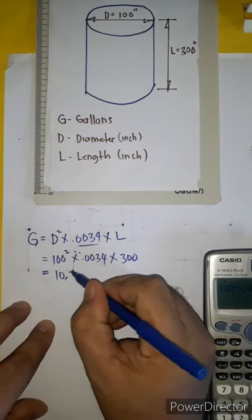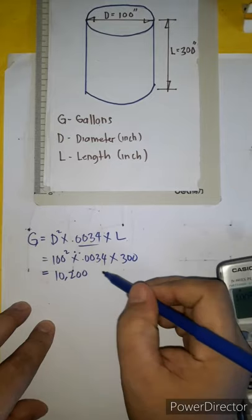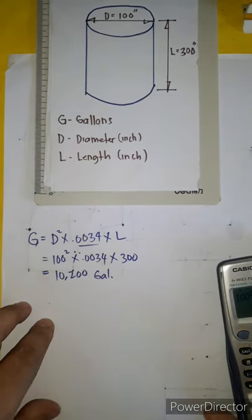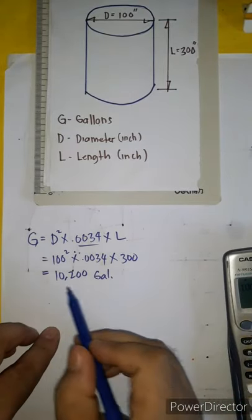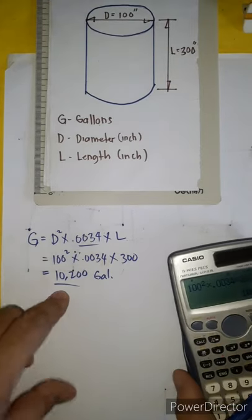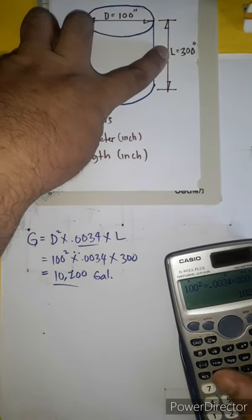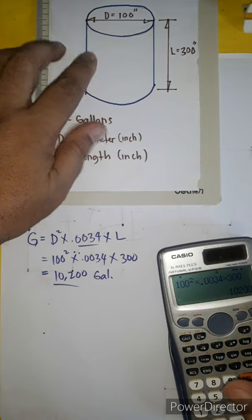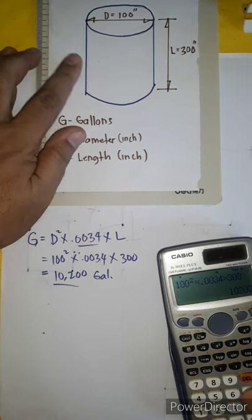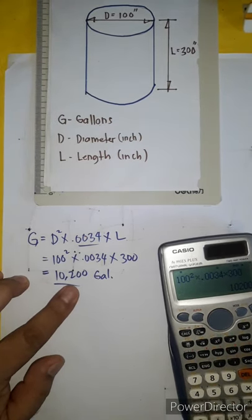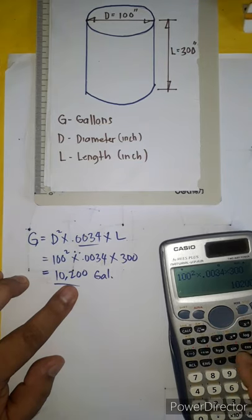So the capacity is 10,200 U.S. gallons. This is 10,200 gallons for a tank that is 100 inches in diameter by 300 inches in length.